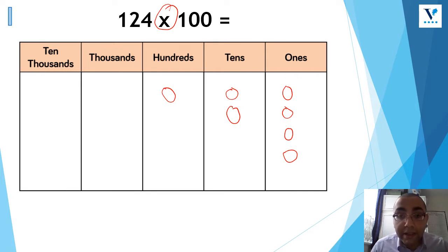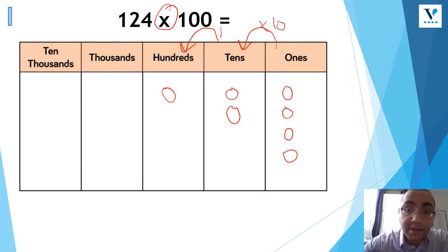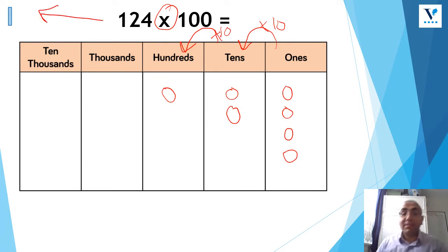And what we notice when we look at our place value grid is that when you move to the left, each time that you move to the left, the value of the digits become 10 times bigger. So I now know that my direction that I'm going to move all the digits is to the left. And the zeros here tells me the number of jumps. So for each zero, that's one jump. Because I'm multiplying by 100, I'm going to be jumping two times to the left.